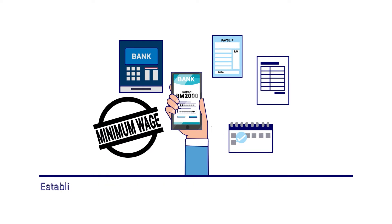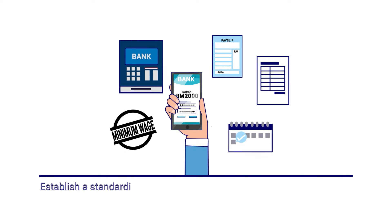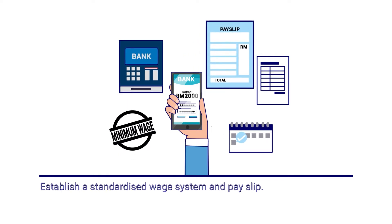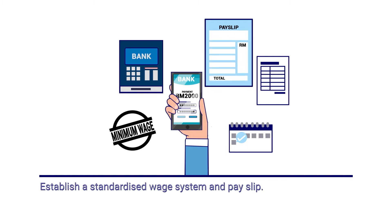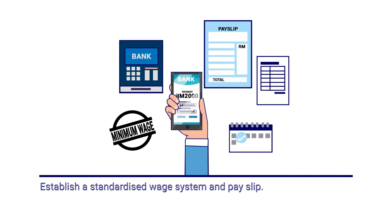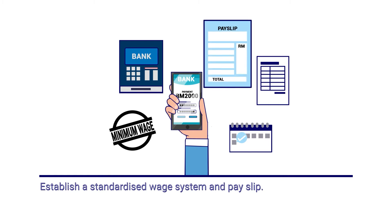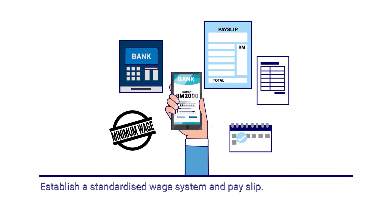Employers should establish a standardized wage system and payslip that provides workers with clear and transparent information on wages, including hours worked, wage rates, overtime, and any lawful deductions.